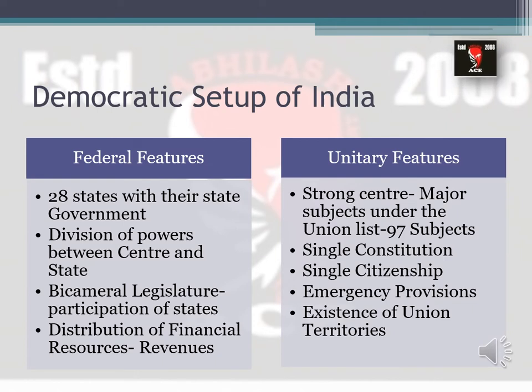Let us look at the democratic setup of India. Democracy is a system wherein people have the right to choose their own leaders — to choose their own government to rule them and work for their welfare. Different countries have different democratic setups depending on whether they have adopted a federal or unitary form. India has a very unique setup with both federal and unitary — also called non-federal — features.